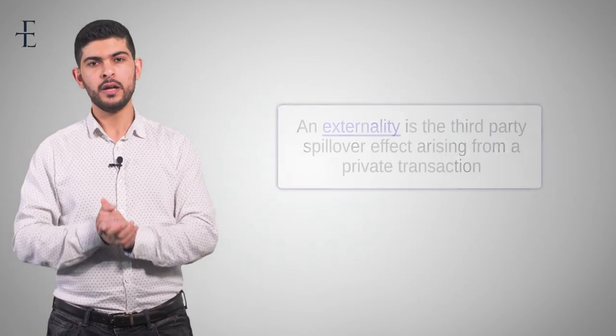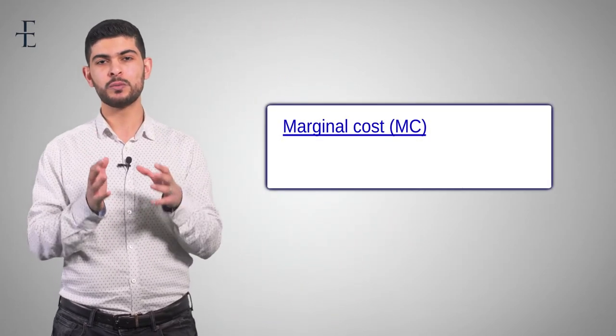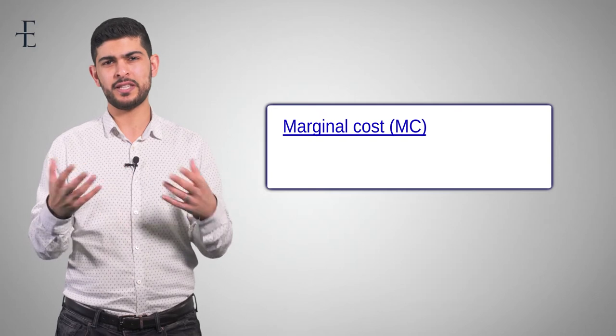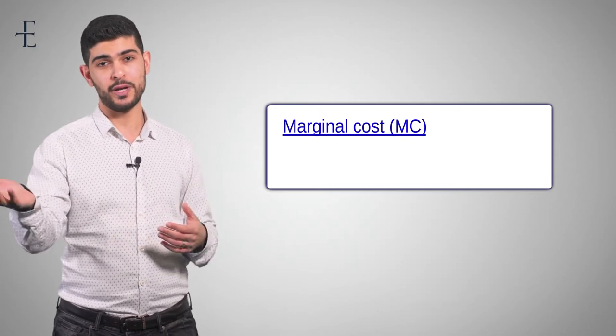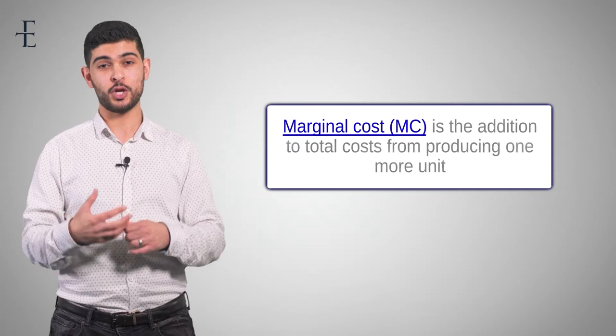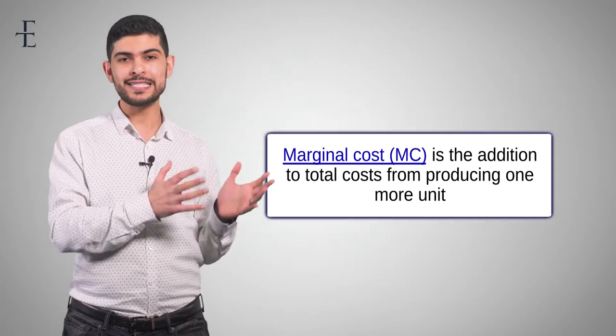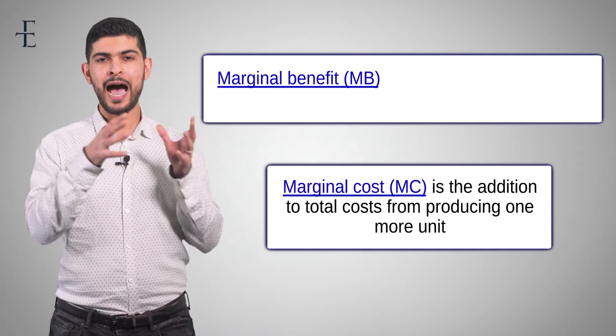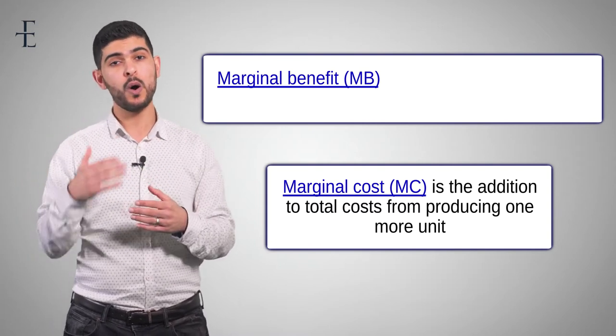Now we're going to do this in a slightly backwards way. We're going to go through how to construct the diagram systematically, one step at a time first, and then add the theory second. In order to construct the diagram, there are two concepts we haven't yet come across. The first is marginal cost — marginal is just a fancy way of saying one more unit, so marginal cost is the cost of producing one more unit. The second term, marginal benefit, is how much benefit you get by consuming one more unit.